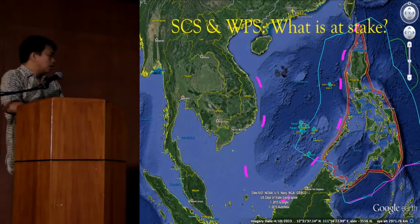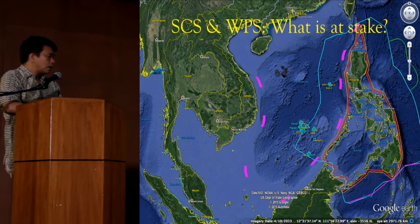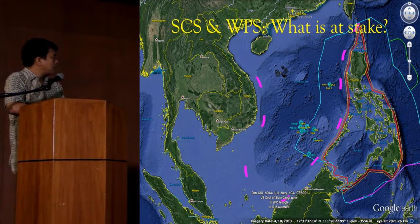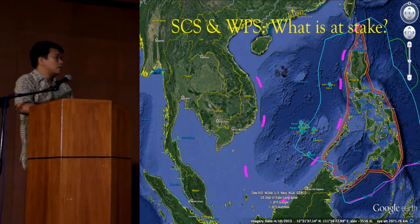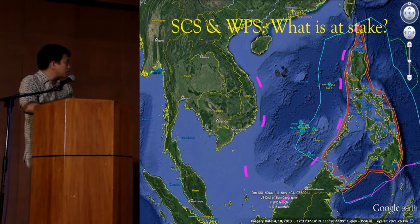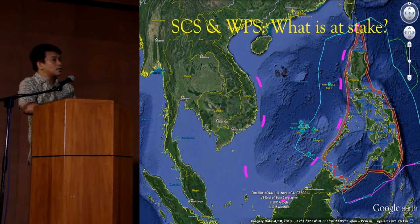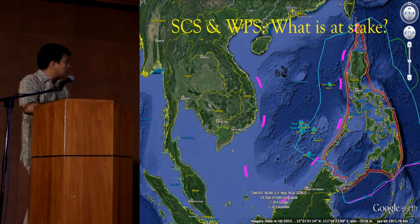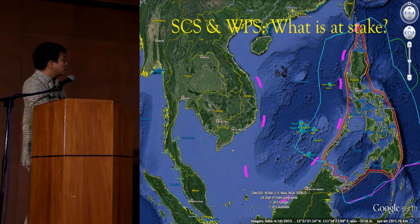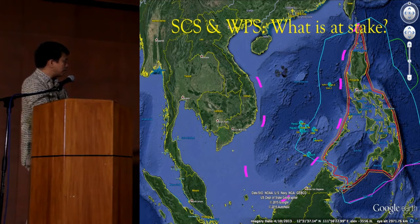Before we look at what happened, let's take into account what is actually at stake. Why are these countries claiming the South China Sea, or parts thereof? This map — another representation which I made — shows you both the nine-dash line claim of China based on that 2009 map.